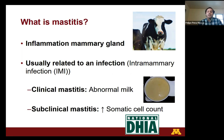On the other hand, subclinical mastitis is defined solely by the presence of abnormal somatic cell count, which basically represents an increasing number of immune cells in milk.